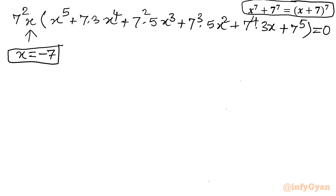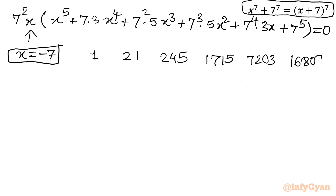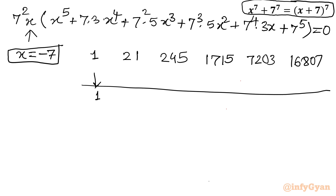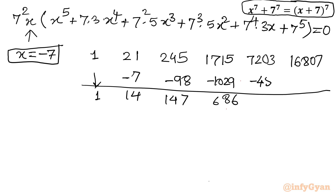Writing the coefficients for synthetic division: 1, 21, 245 (since 7²×5 = 245), 1715 (7³×5), 7203, 16807. Using root x = −7: leading coefficient 1 as-is; −7×1 = −7; 21+(−7) = 14; 14×(−7) = −98... proceeding through gives remainders 686, −4802, 2401, and finally −16807 + 16807 = 0. So the synthetic division confirms x = −7 as a root.